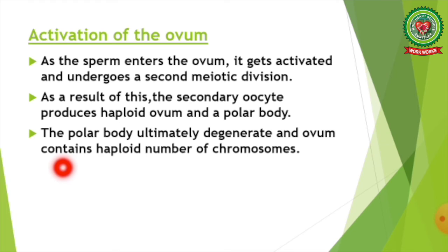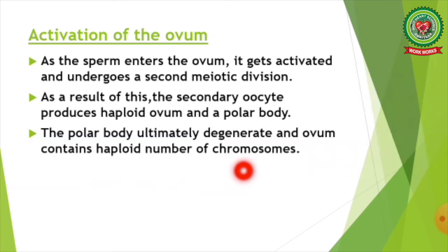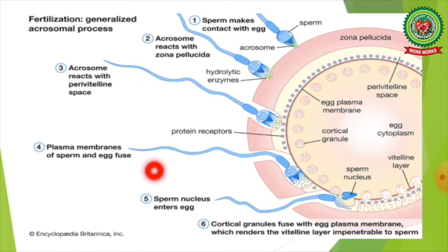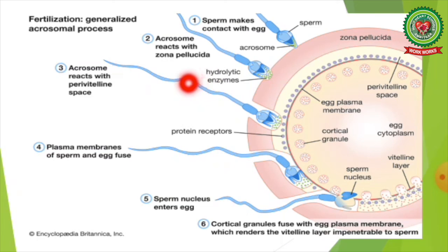After penetration of the sperm into the ovum, the next step is activation of the ovum. As the sperm enters the ovum, it gets activated and undergoes a second meiotic division. As a result, the secondary oocyte produces a haploid ovum and a polar body. The polar body ultimately degenerates and the ovum contains the haploid number of chromosomes. In this image we can see the complete process of fertilization. After a sperm comes in contact with the outer layers of an egg cell, the acrosome — the prominence at the anterior tip of the spermatozoa — undergoes a series of well-defined structural changes that open a path for the sperm nucleus.